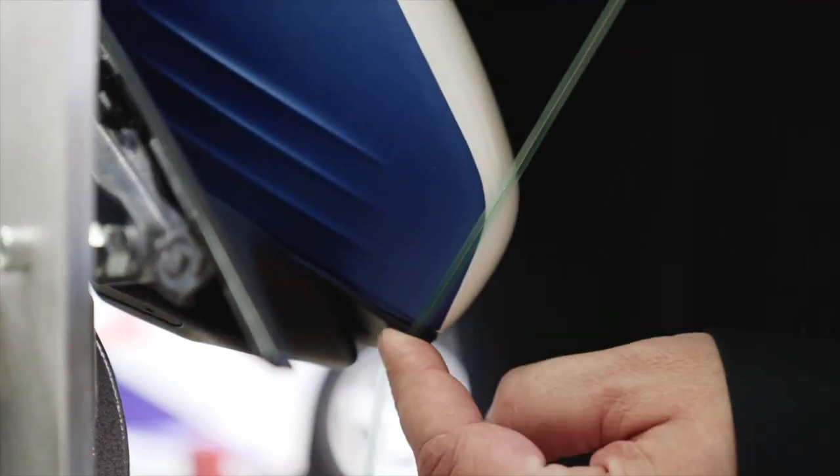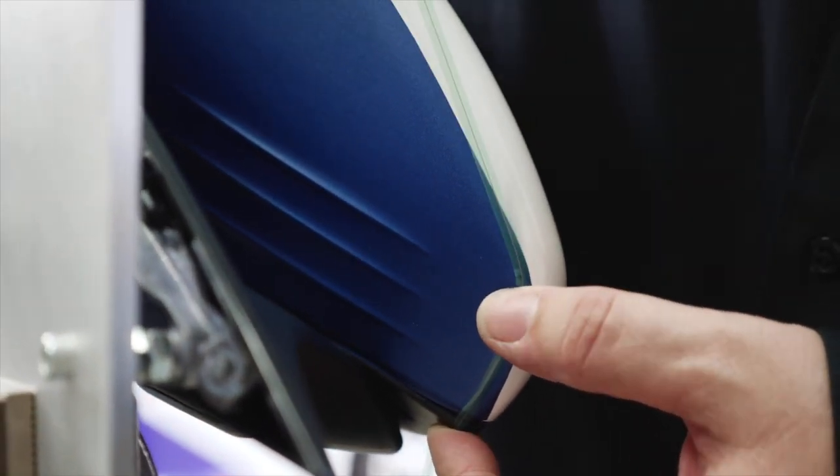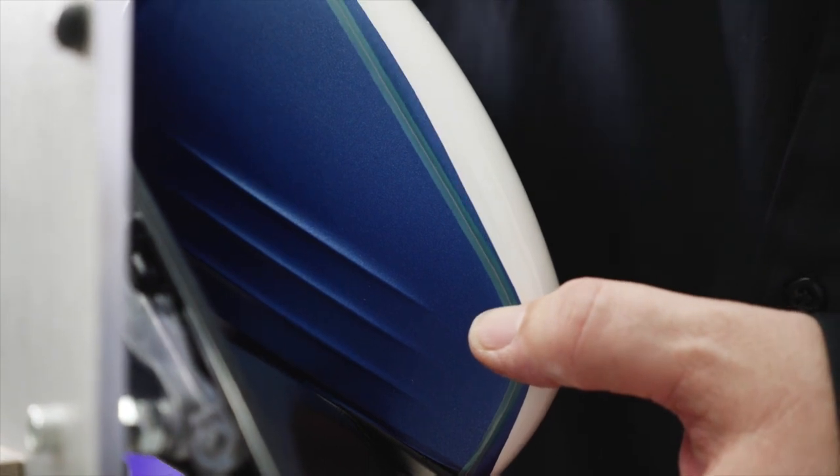Once again, using knifeless tape design line, apply the tape approximately 1mm from the edge of the film. Press the knifeless tape onto the film.